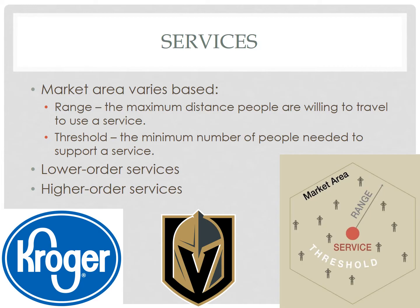The market area is influenced primarily by two factors: population and distance. Range is the maximum distance people are willing to travel to use a service, while threshold is the minimum number of people needed to support a service. Smaller settlements called hamlets in central place theory do not have very many people.